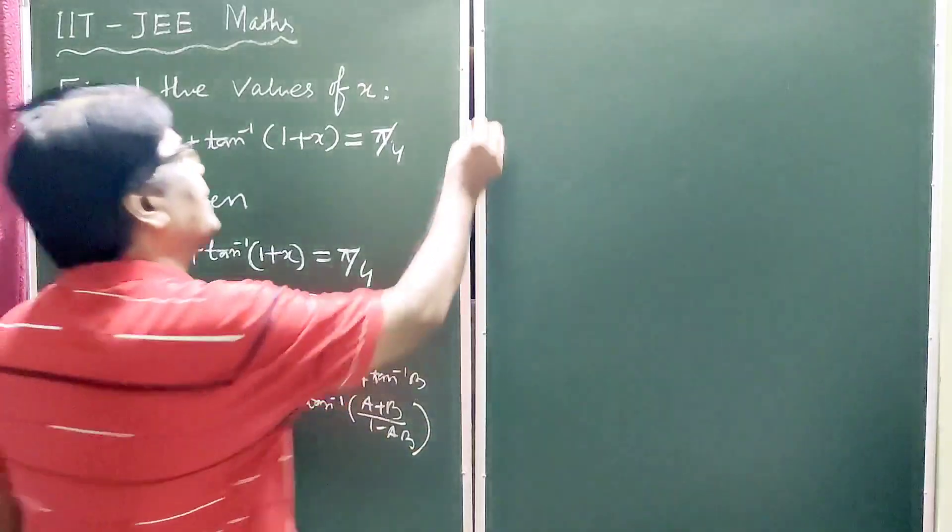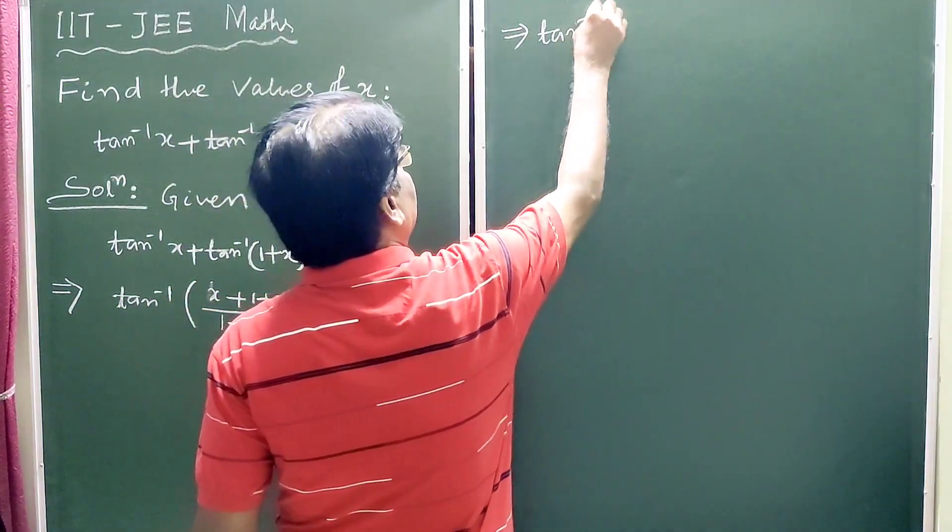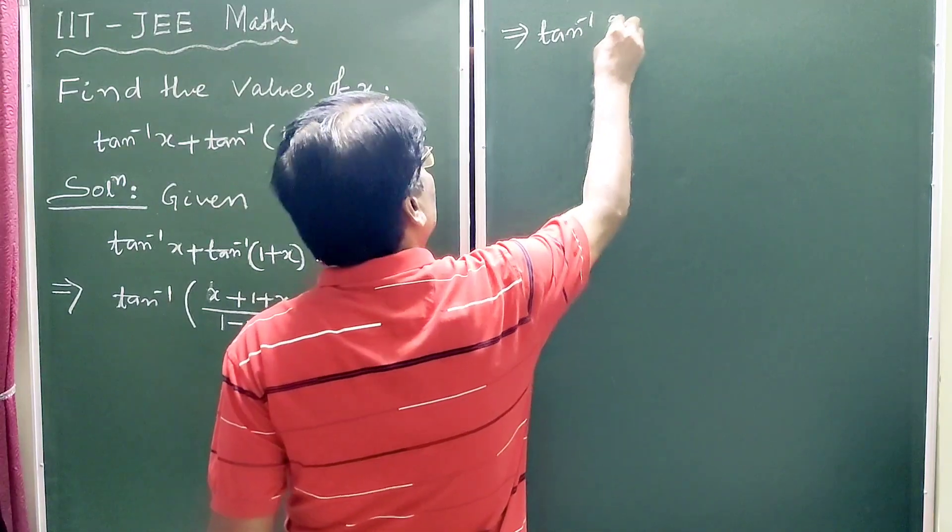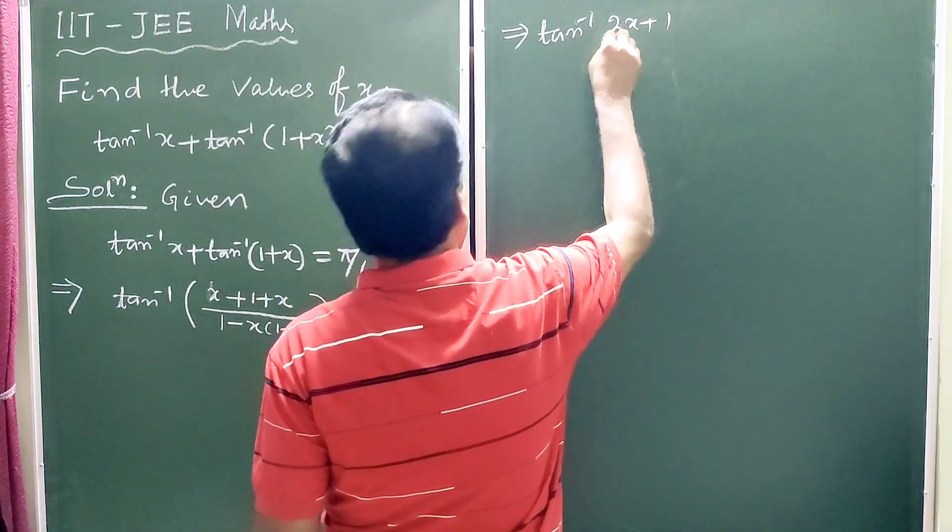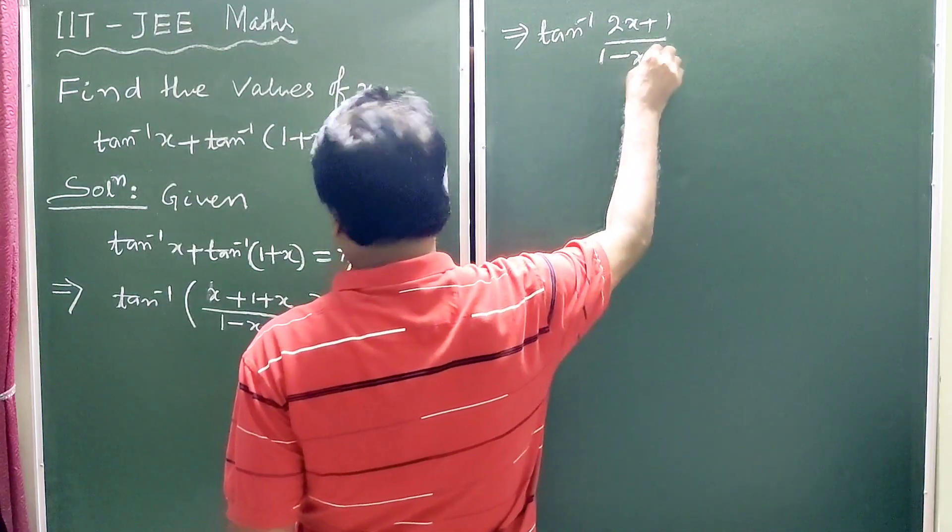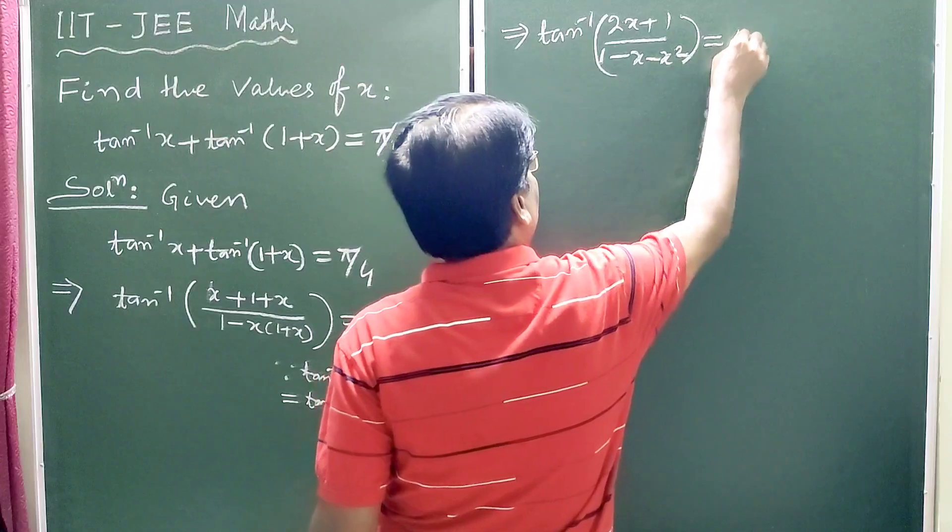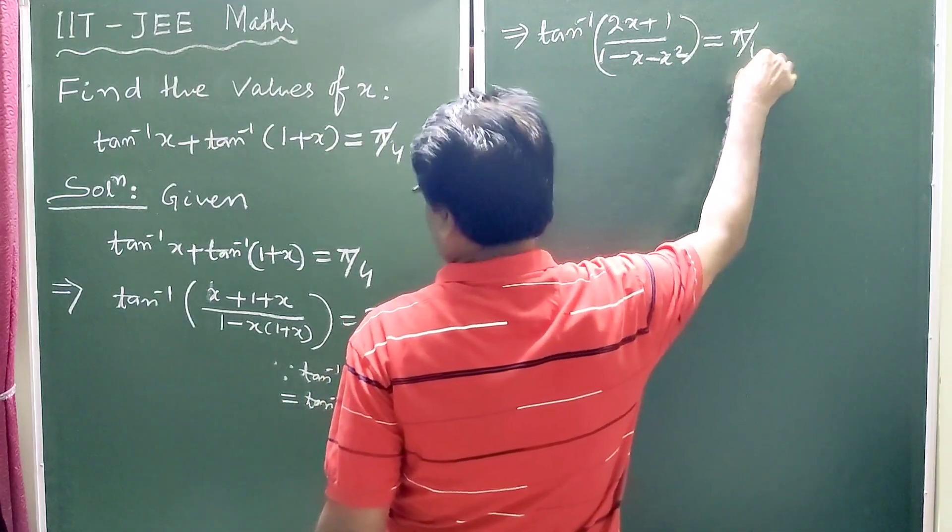So this implies tan inverse of 2x plus 1 divided by 1 minus x minus x square is equal to pi by 4.